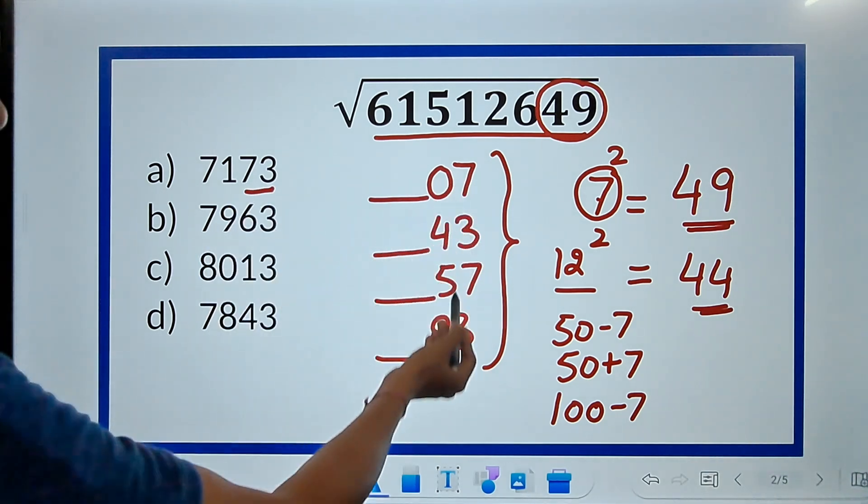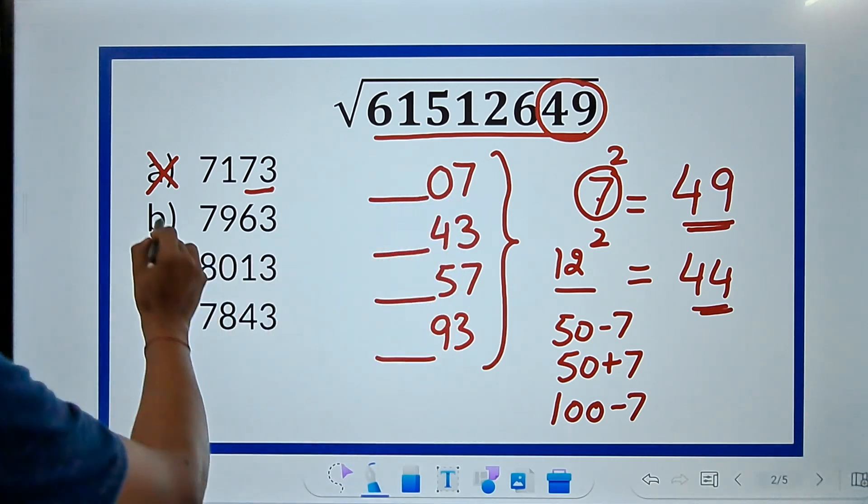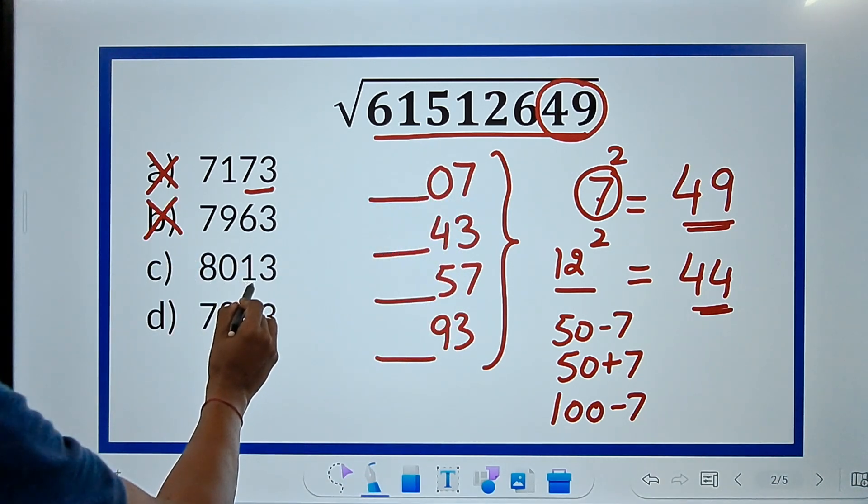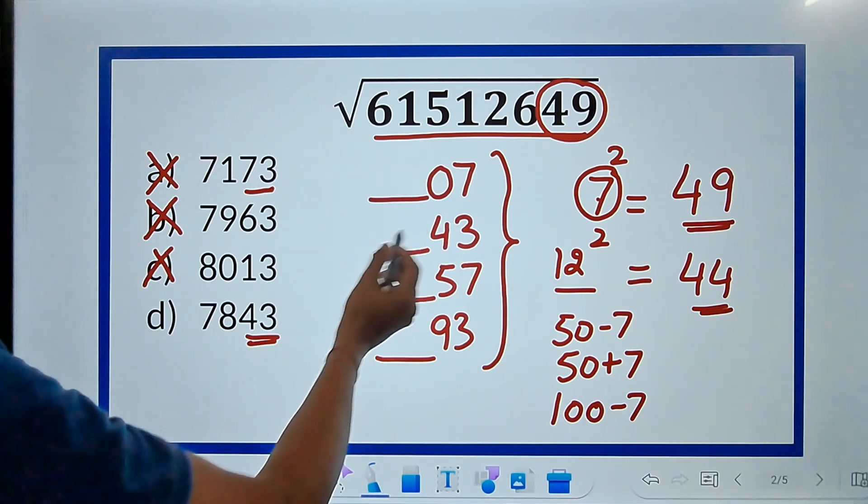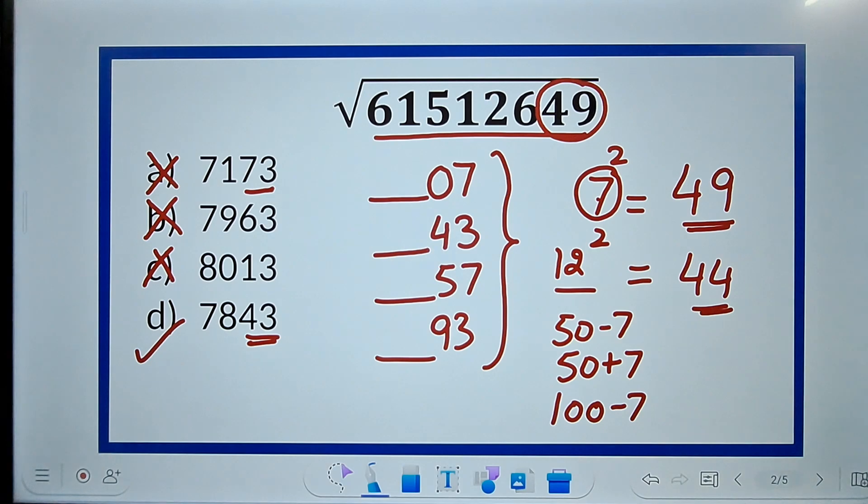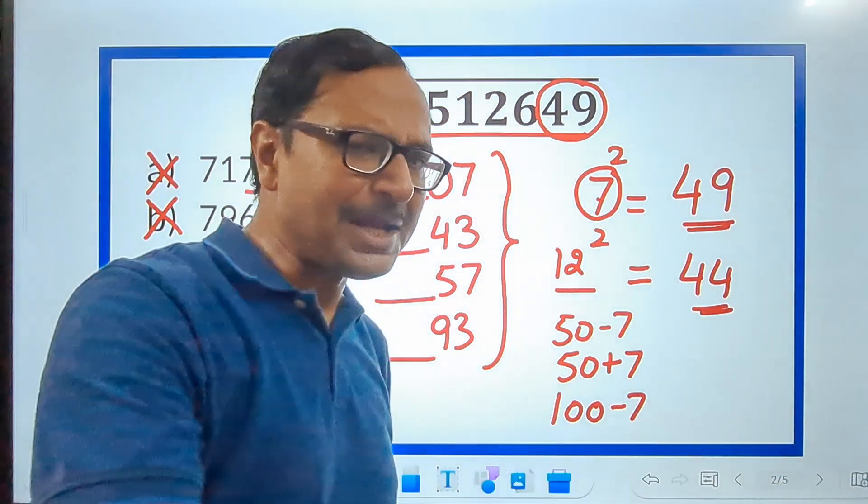73, is it a possibility? No. 63, is it a possibility? No. 13, is it a possibility? No. 43, yes, it is a possibility. And therefore, the answer for this question is 7843. Isn't that amazing, friends?